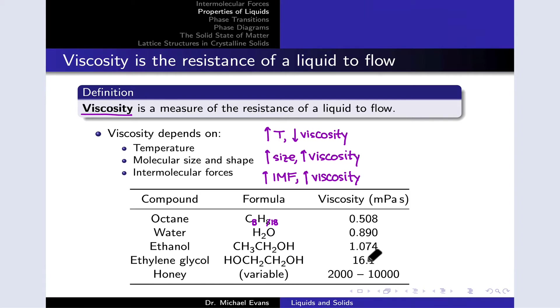Honey is a polysaccharide, a solution of a polysaccharide essentially, and has a very large number of these OH groups that can hydrogen bond, which is part of the reason it has such a massive viscosity relative to the others.